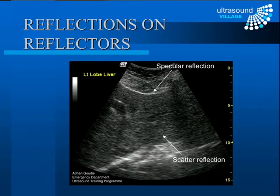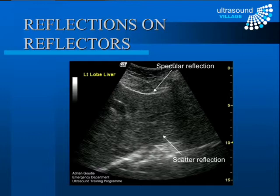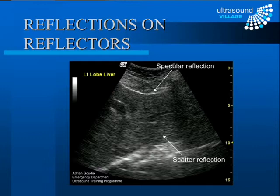Looking at an image of the left lobe of the liver, on the surface we see the large bright specular reflection. From the liver itself we have echo texture generated by multiple small anatomical structures creating wave fronts that spread out and interfere. Specular reflection represents an actual interface at that position, whereas the individual dots of echo texture do not each represent a distinct anatomical structure — they arise from interference of multiple wave fronts from scattered reflections.